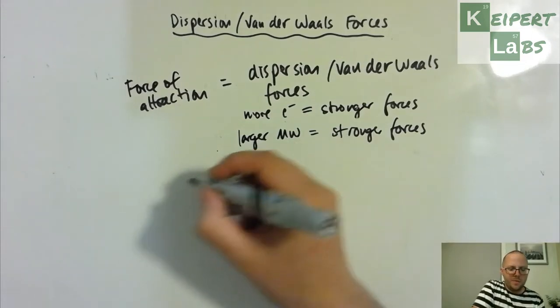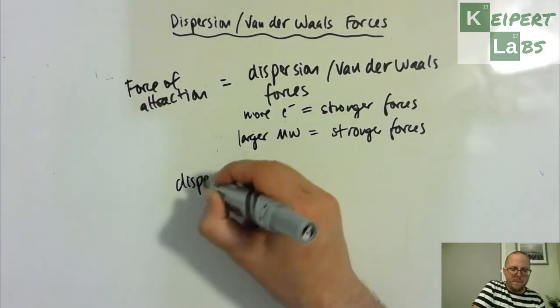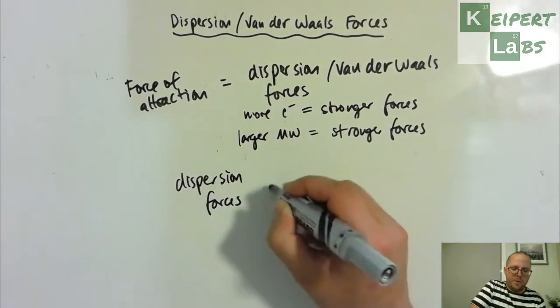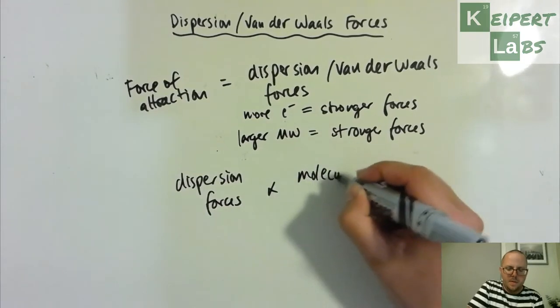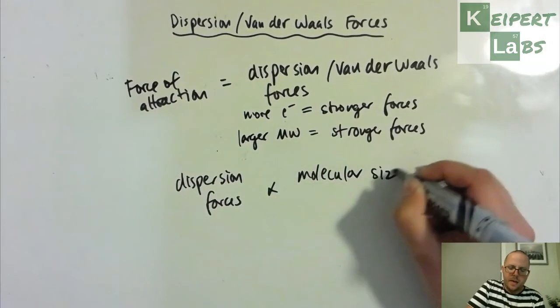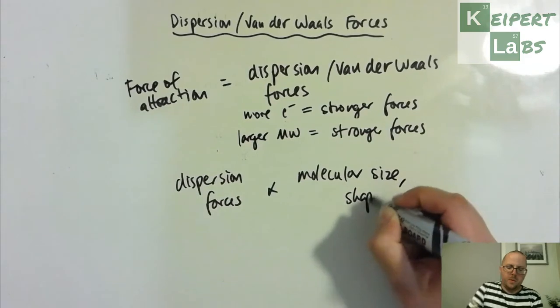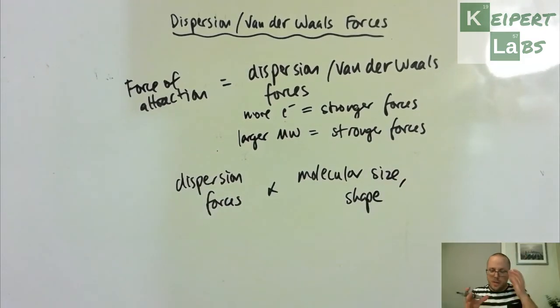Dispersion forces are proportional to molecular size and shape. Shape also has an effect on it as well, because the closer those molecules can interact physically, because of the surfaces that are able to get close, the stronger that attraction is. If you've got lots of parts of the molecule that are very hard to actually approach each other, then the forces are not as strong.